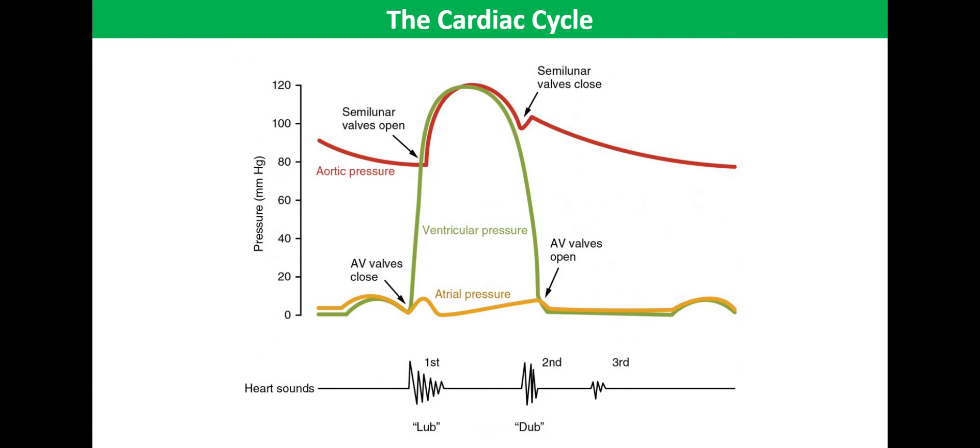Finally, we're going to look at that aortic pressure. That's represented by the red line on the graph in front of you. Aortic pressure rises when ventricles contract as blood is forced into the aorta.